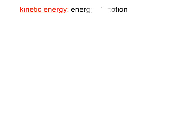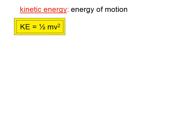Kinetic energy is energy of motion. The equation for kinetic energy, which you've probably met if you've already taken physics, is one-half mv squared. In this equation, in order to get kinetic energy in joules, we need to have the mass in kilograms and the speed in meters per second. If you are given a problem and the mass isn't in kilograms or the speed isn't in meters per second, you need to convert those into kilograms and meters per second before using the equation.